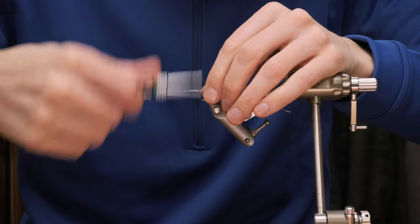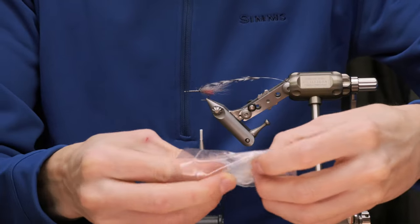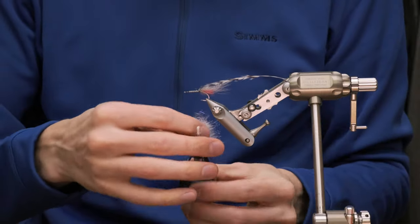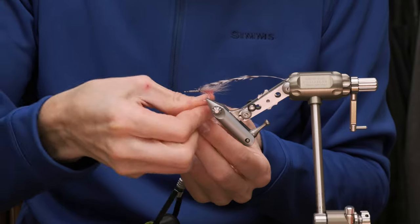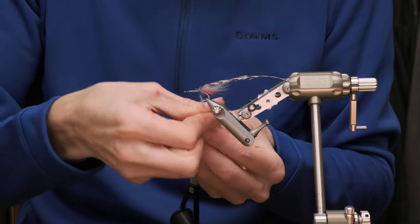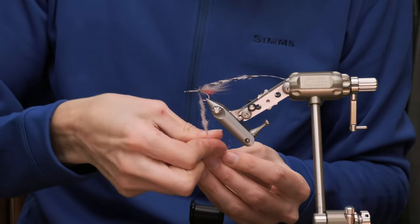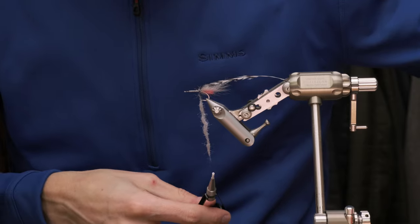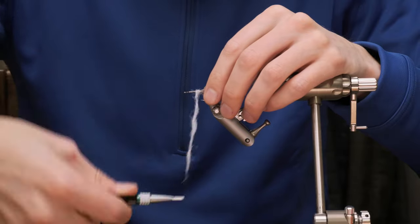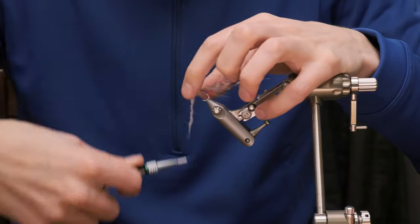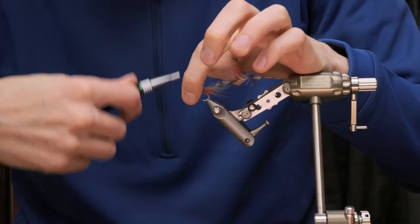I'm gonna take a little bit of the dubbing we also use for the pedigreeze. So this is just a little mix of some SLF or scud dubbing mixed in with some ice dub. And for this we use the UV ice dub. Create your body with the dubbing. And make sure you leave about a millimeter in front of the eye of the hook to finish the fly.